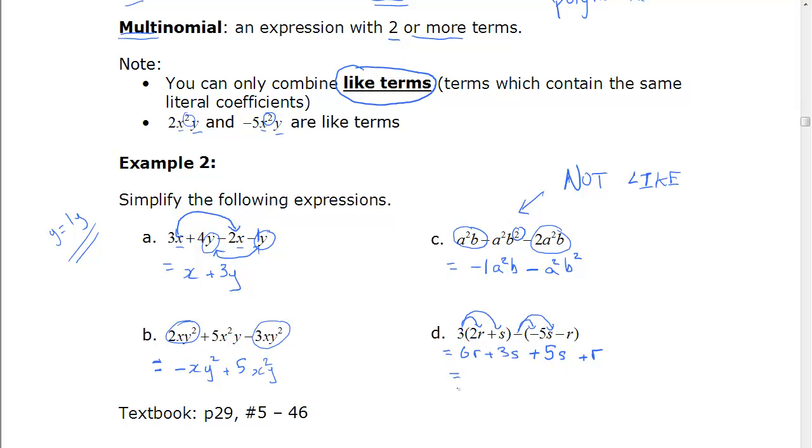Now we collect our terms that are the same. So r and r go together. And s and s go together. 6 plus 1, 7r. 3 plus 5, 8s.